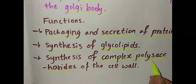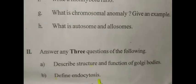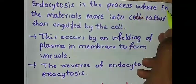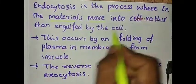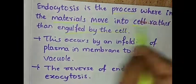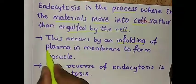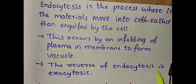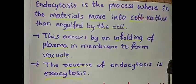The second question is define endocytosis. Endocytosis is the process wherein materials move into the cell rather than being engulfed by the cell. This occurs by an infolding of the plasma membrane to form a vacuole. The reverse of endocytosis is exocytosis.